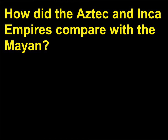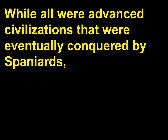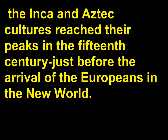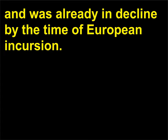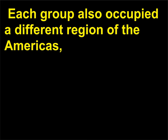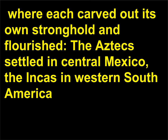How did the Aztec and Inca empires compare with the Mayan? While all were advanced civilizations that were eventually conquered by Spaniards, the Inca and Aztec cultures reached their peaks in the 15th century just before the arrival of the Europeans in the New World. The Mayan civilization reached its zenith about 500 years earlier and was already in decline by the time of European incursion. Each group also occupied a different region of the Americas: the Aztecs settled in central Mexico, the Incas in western South America.